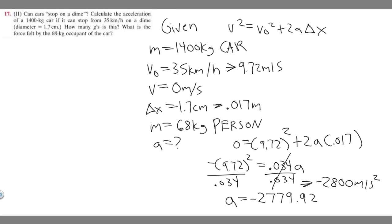The second question tells us to find how many g's this is. In order to find g's, you just want to take your acceleration. I'm just going to take 2,779 and just take the magnitude of it, so you don't need the minus sign.